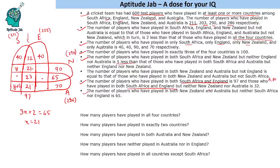For the last statement: the number of players who played in both New Zealand and Australia but not England includes the exclusive NZ∩Aus value (65) plus another intersection region, call it a. This total (65 + a) equals those who played in both New Zealand and Australia but not South Africa, which is also 65 + a. So both these symmetric regions equal a.